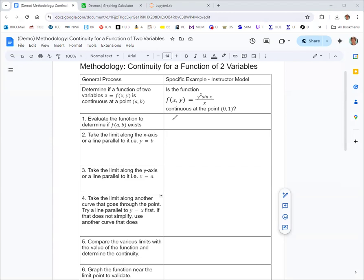The first step is to evaluate the function at the point. Evaluating at (0,1), we replace x with 0 and y with 1, getting 1²sin(0)/0. Since we have division by zero, this number does not exist. So technically right away it's not continuous, but we want to know more and get more practice.